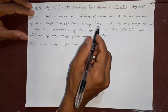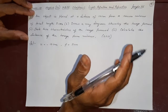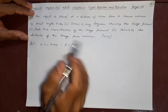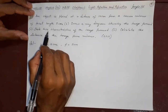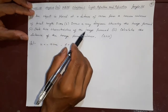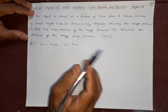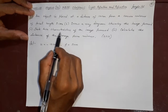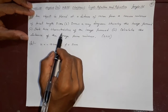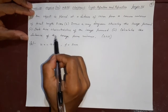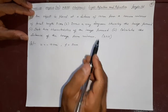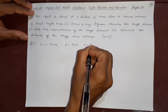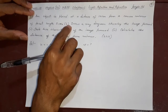Draw a ray diagram — that means you have to show the diagram also, we'll do that — showing the image formed. Show two characteristics of the image: what type of image you will get, its property, characteristics, its nature you have to tell, and calculate the distance of the image from the mirror. So you have to find V. Once I find V, everything will follow.